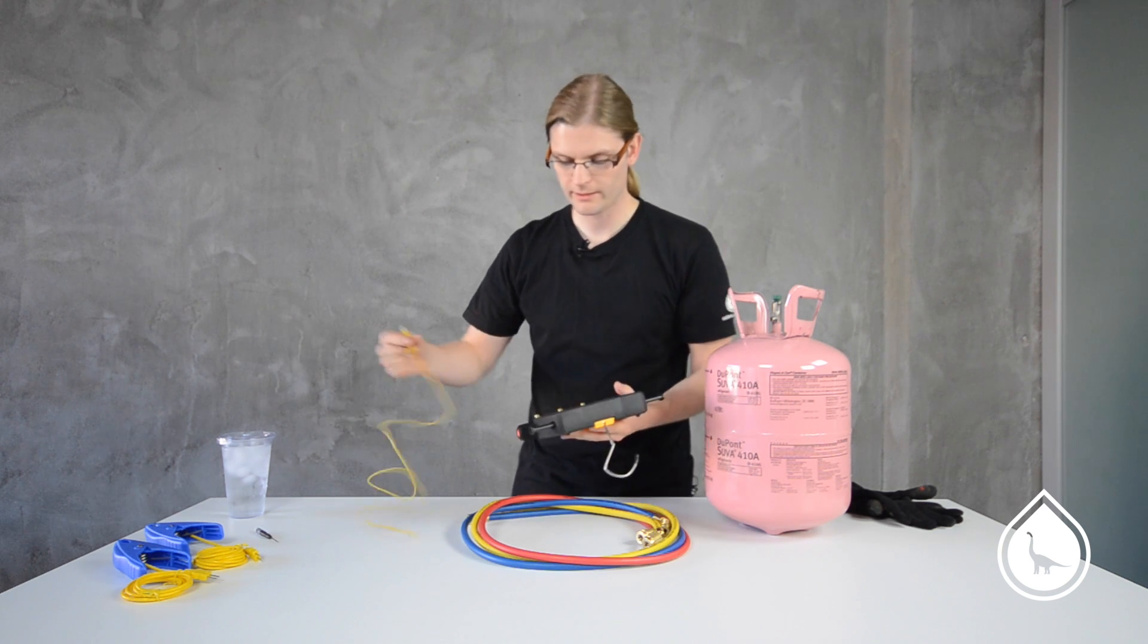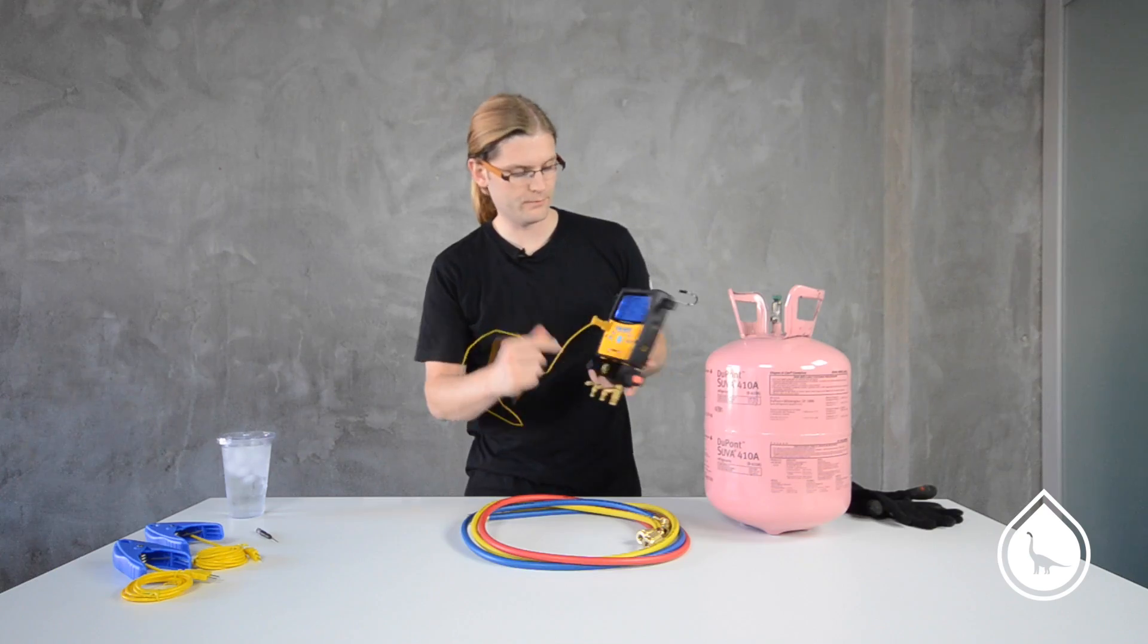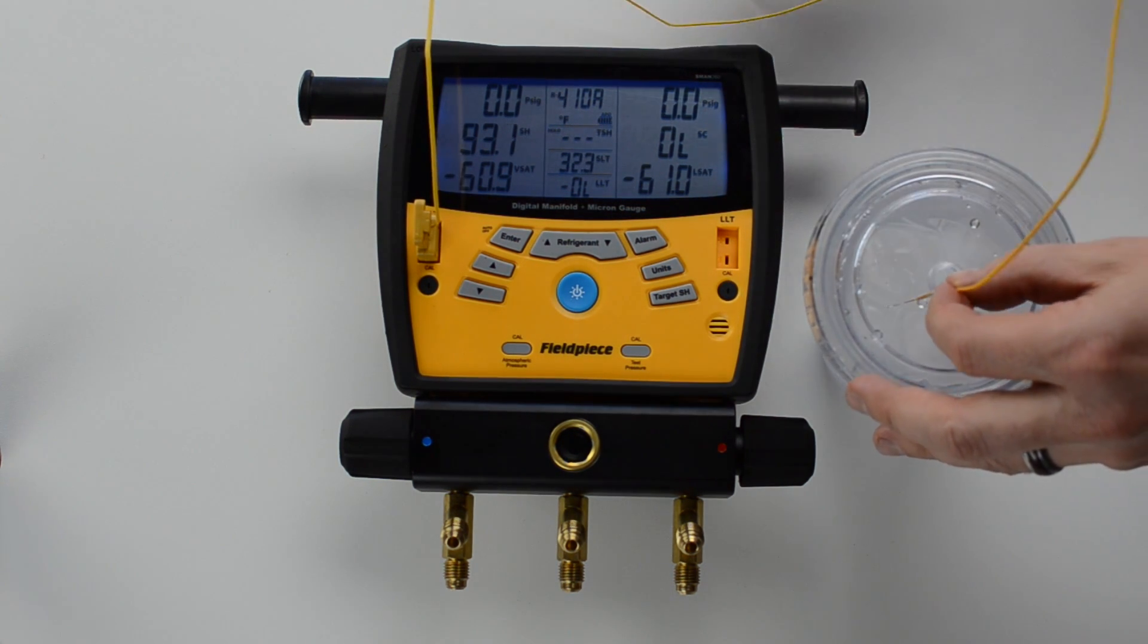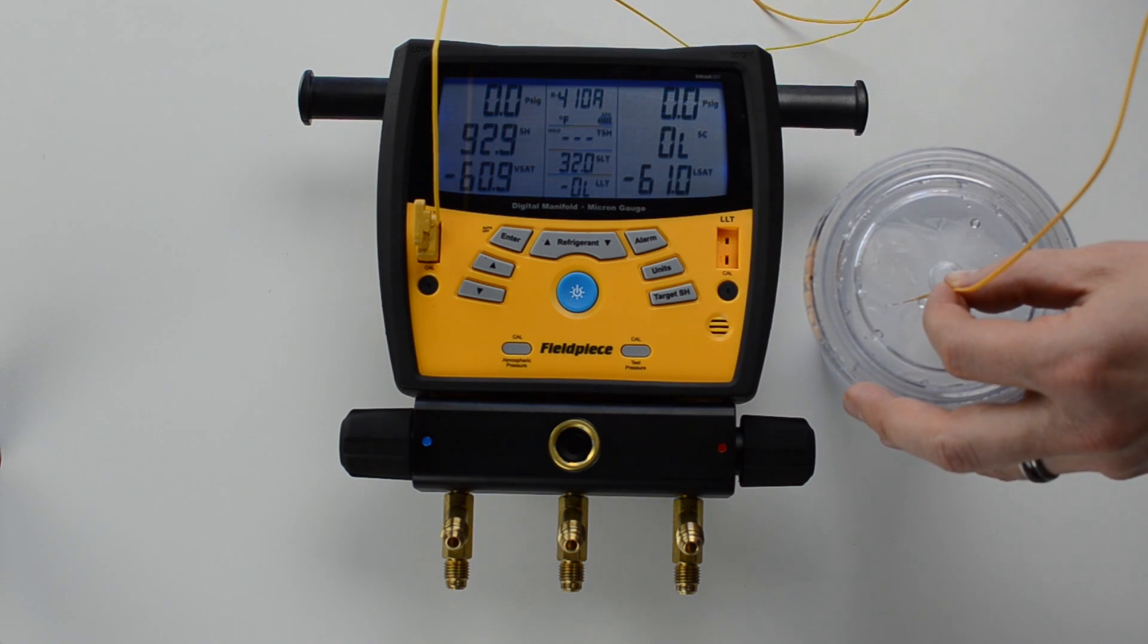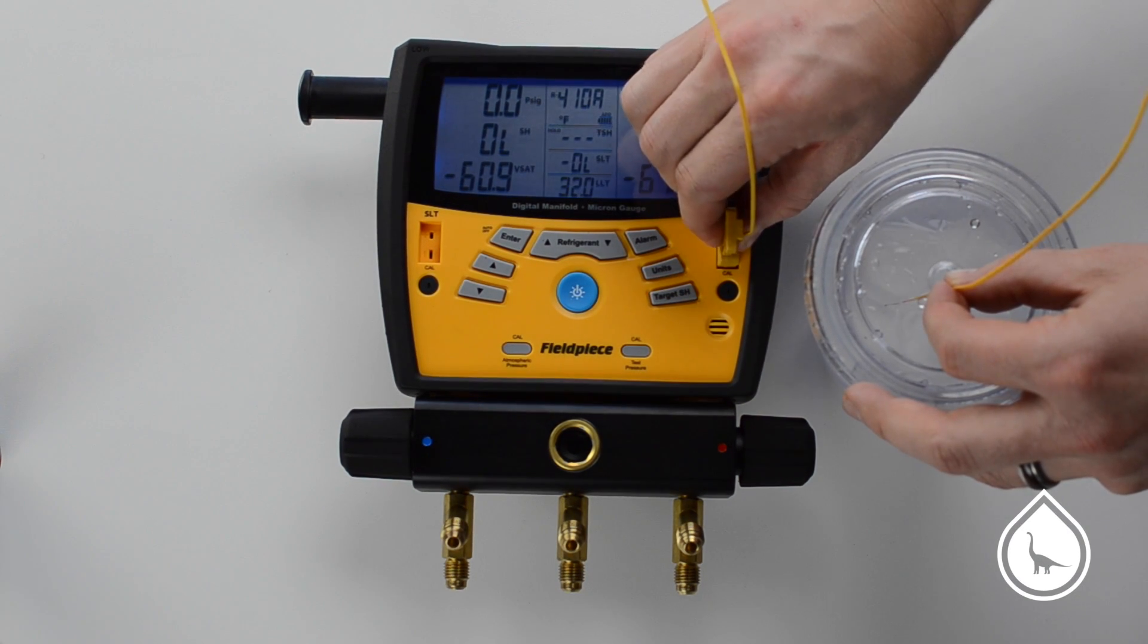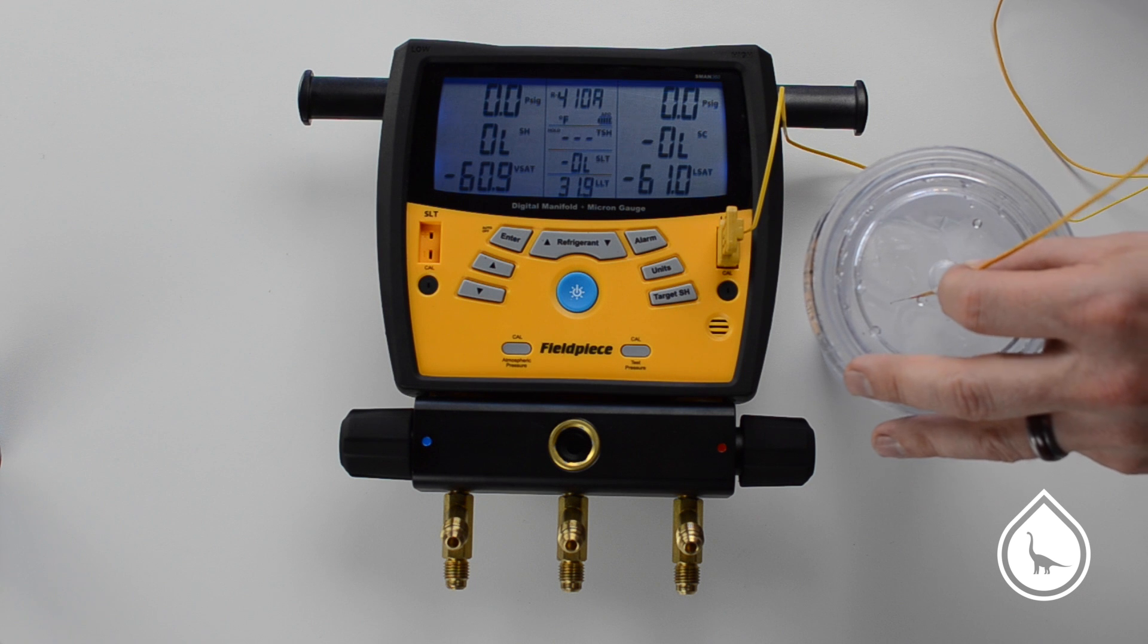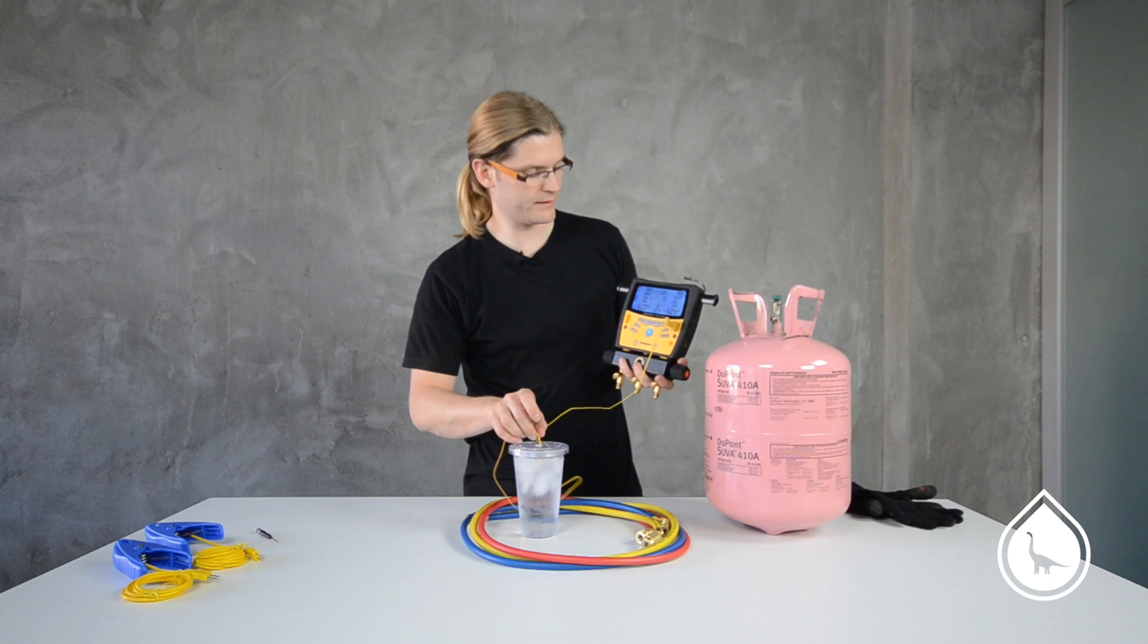Next thing we want to check is that the thermocouples are reading temperatures correctly. So I'm going to plug it into our suction line temperature port with the end of the thermocouple close to the ice, and I'm reading just over 32, 32.1. We'll plug into the liquid line temperature. We're reading 31.9, 32 right on. So I'm not going to touch those.